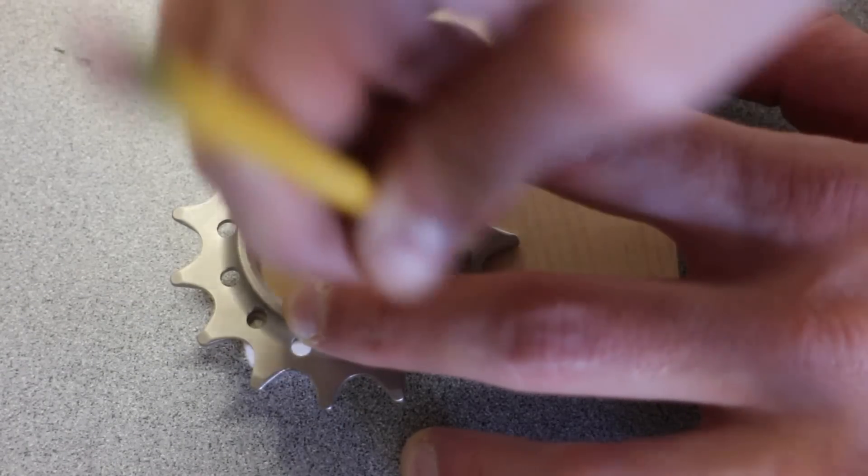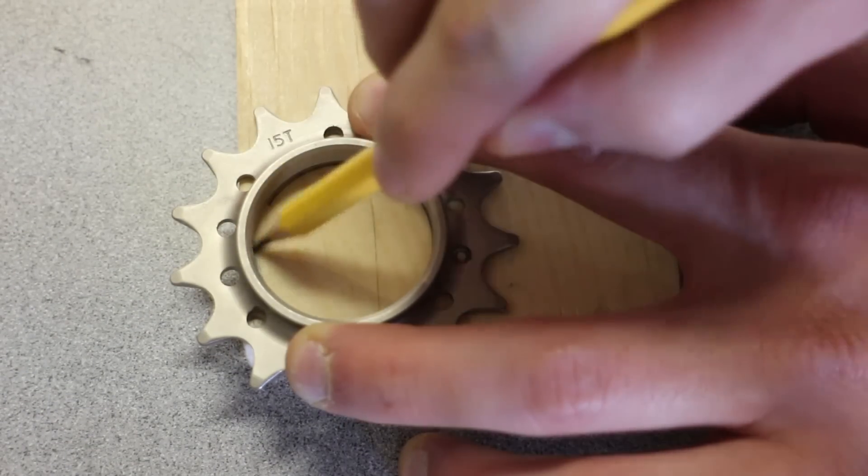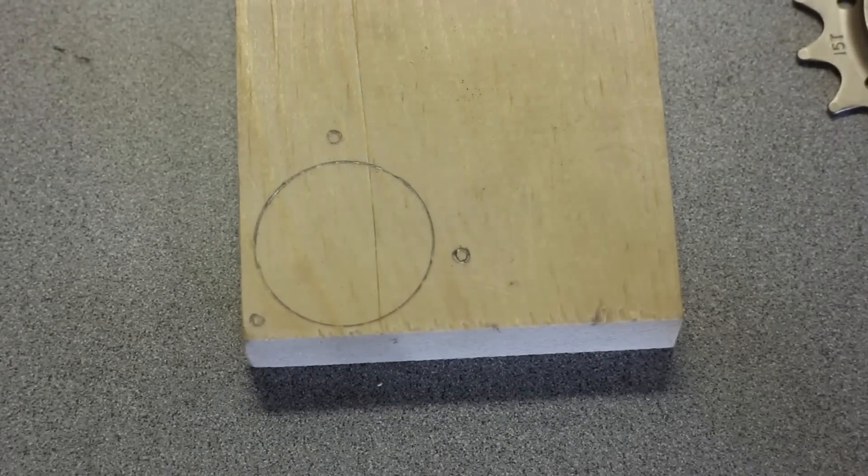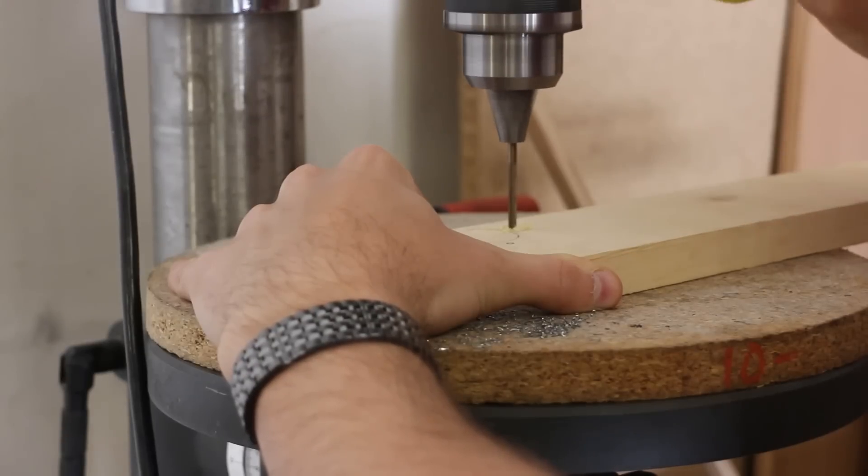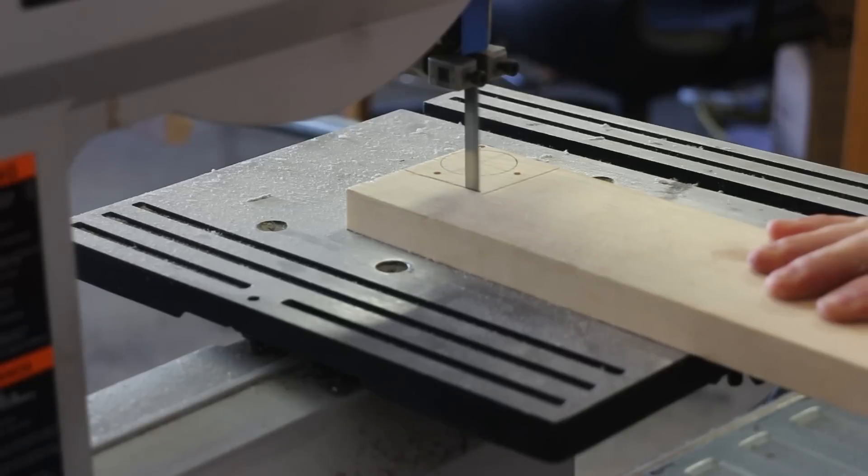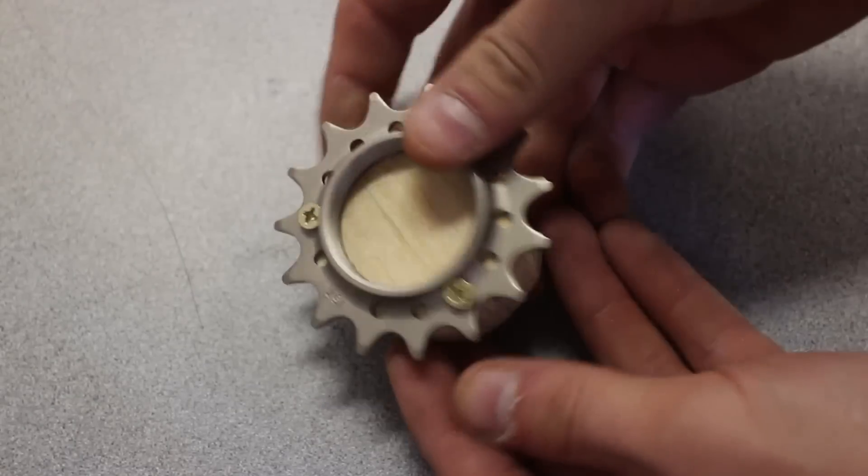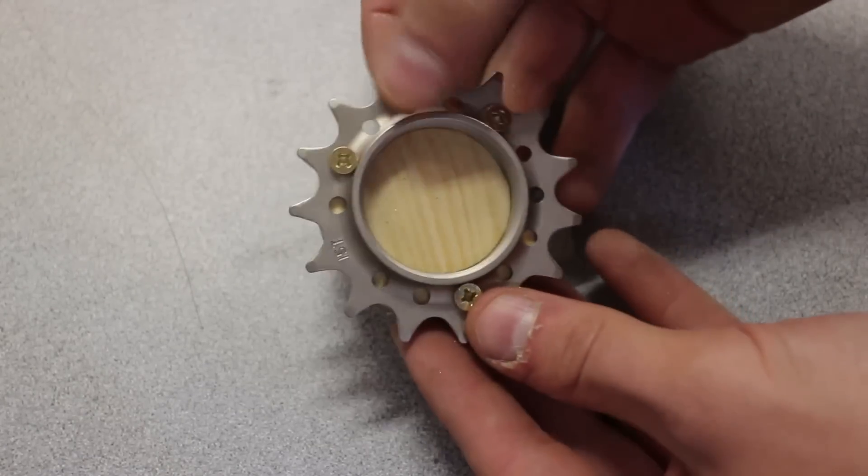So I lined it up on a block of wood and marked three holes and the inside hole. Then I drilled out all the small holes for mounting and shaped the wood so it wouldn't interfere with the gears. After screwing it in place, this is what I ended up with.